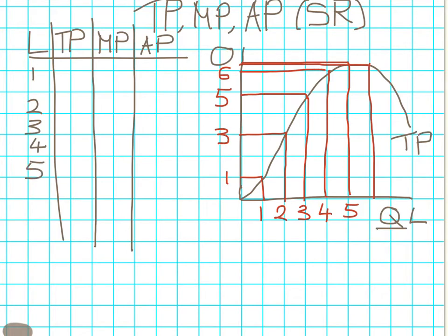One unit of labour, the total product is one. Then three, then five, then six, and then we're getting something like 6.4.